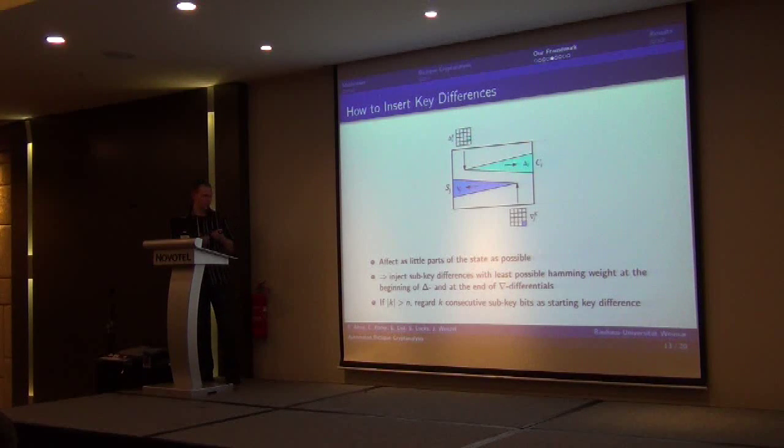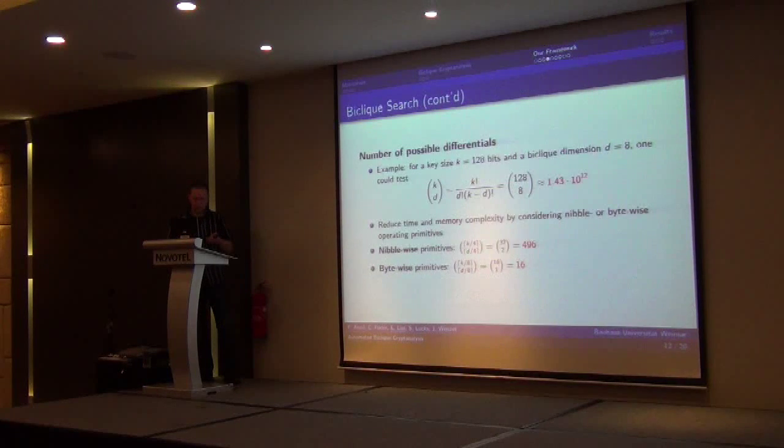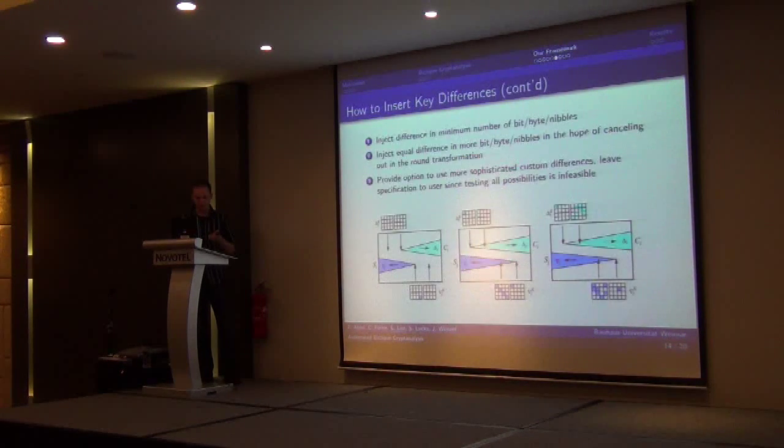Therefore it is desirable to inject some key differences with the least possible Hamming weight at the beginning of the delta and the end of the nabla differences. Moreover, for ciphers where we have key length which extends the sub-key size, it is in many cases possible to pass one round for free and even more. And then to inject as little parts which are active in the state as late as possible.